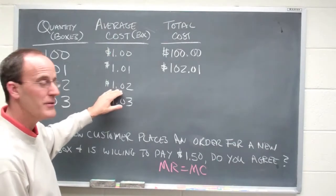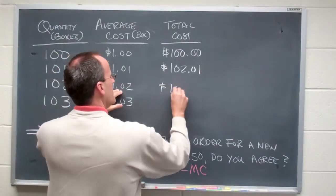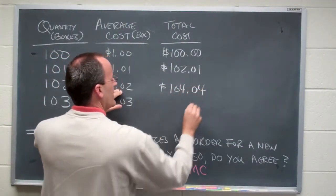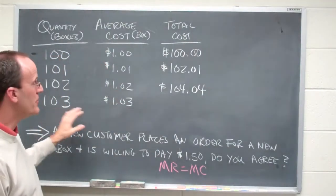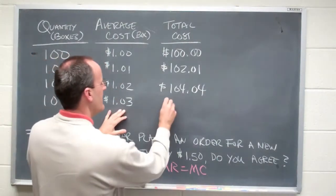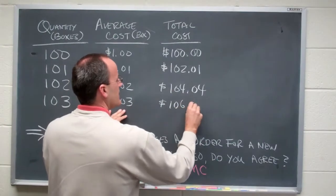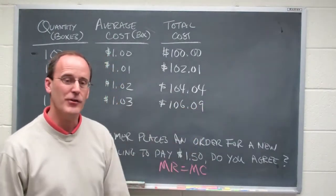102 times a dollar and two cents is 104 and four cents, and 103 times a dollar three is 106 with nine cents left over.